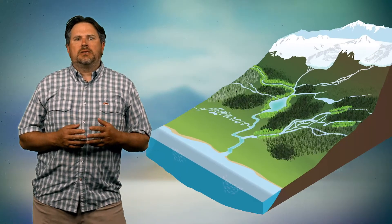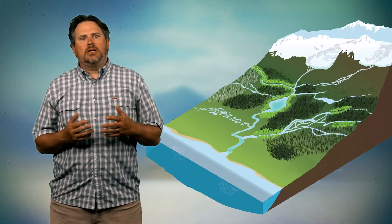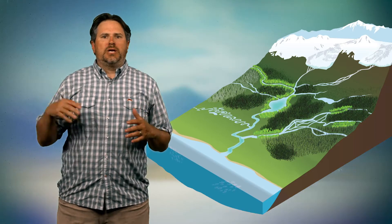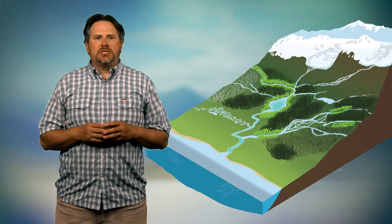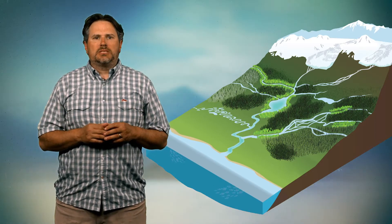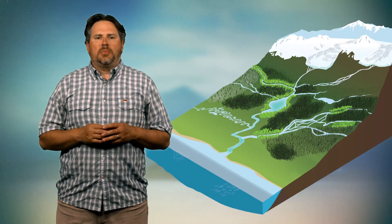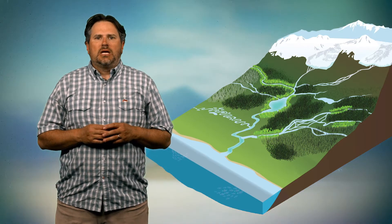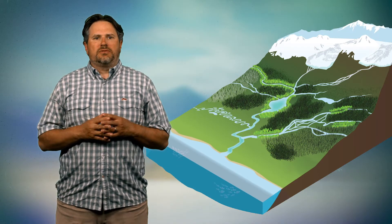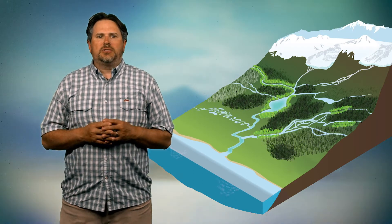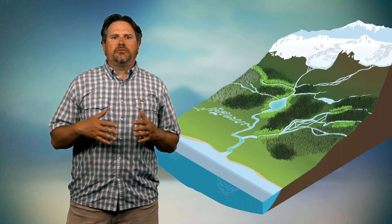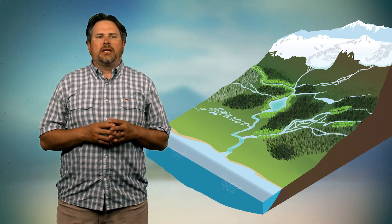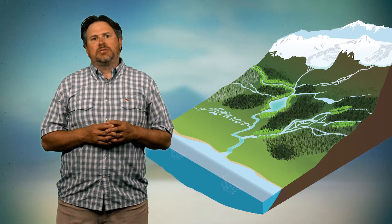To set our stage, I want to think about a representative watershed with a river draining down from snow-capped mountains. There's ice fields up high, there's glaciers, and the water flows through a series of lakes down into a lowland floodplain. It drains through forests and then ultimately out into the ocean.